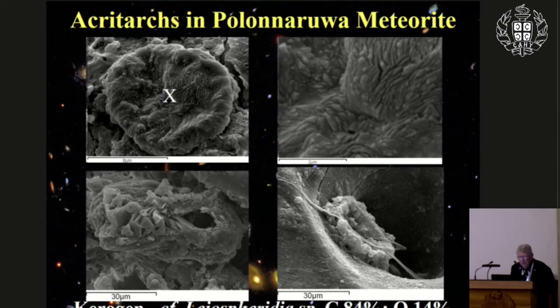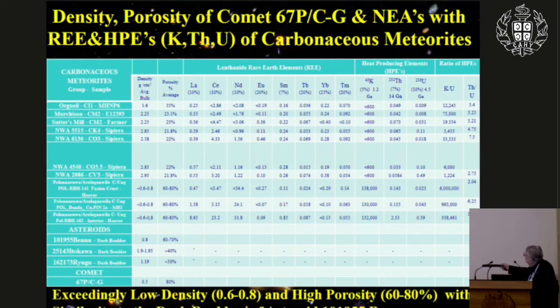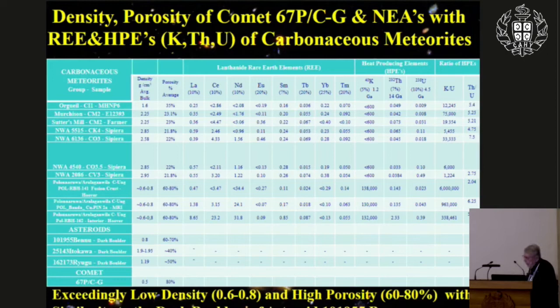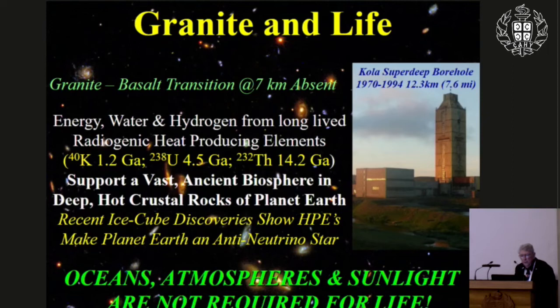Working with Dr. Frontasyeva, we measured trace elements and heat-producing elements — potassium, uranium, and thorium — in the Polonarua stones. These values are many orders of magnitude higher than what you find in typical carbonaceous meteorites. These heat-producing elements are also found in deep crustal rocks of Earth, including granites from the Kola Superdeep Borehole. Tommy Gold predicted a deep hot biosphere in 1992, and we now know it exists on Earth, containing possibly more than 90% of the biomass of archaea and bacteria.